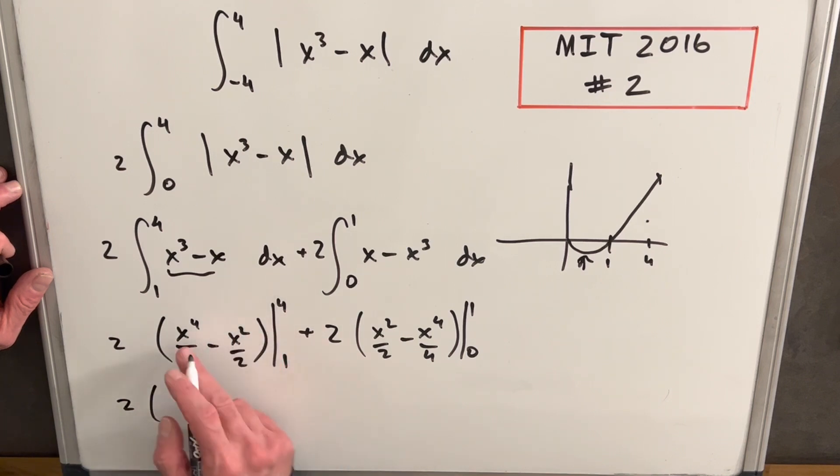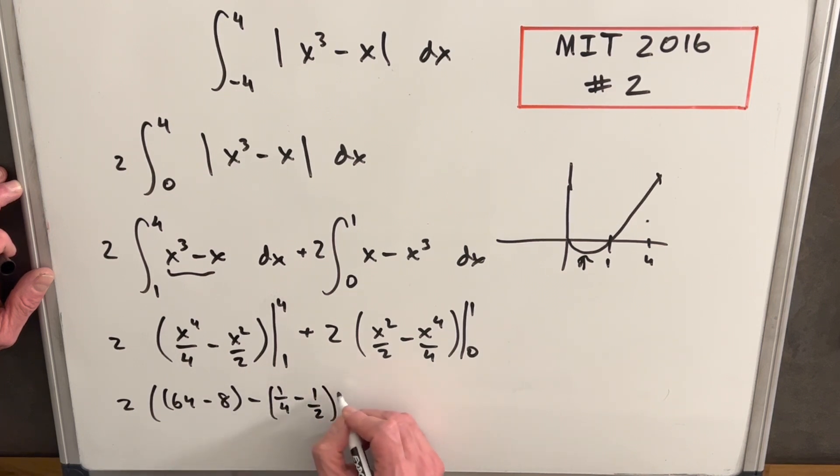So okay, so four in here is going to be 64. And then four in here is going to be minus eight. And then we need to do the other part, which is going to be plugging in a one: one is one fourth minus one half.